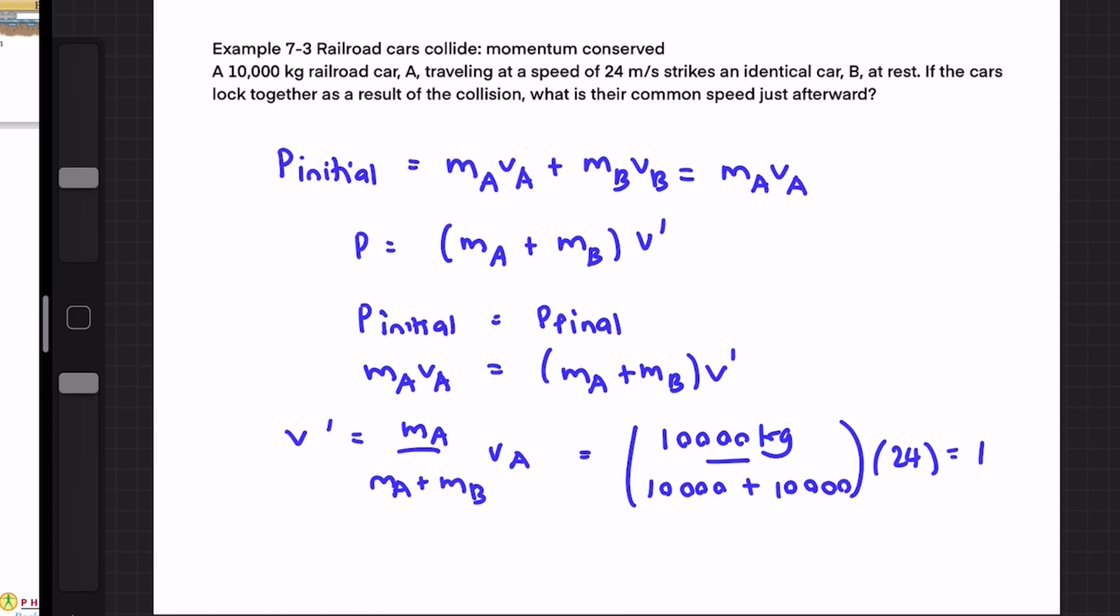So therefore the answer is 12 meters per second. So v prime or the result is 12 meters per second to the right. Next we'll be going to talk about collisions and impulse.